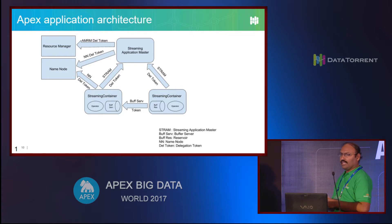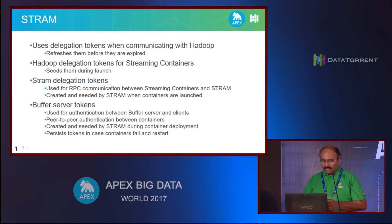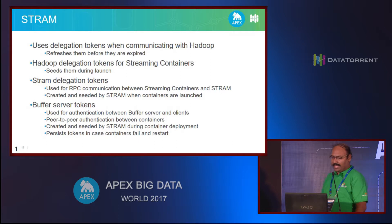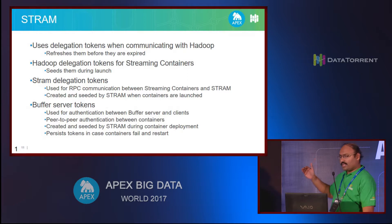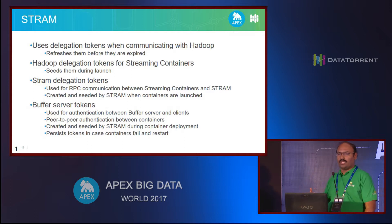The same process happens when the application master is starting all the containers. In this case, the application master acts like the delegation token server - it issues its own delegation tokens and seeds the containers, so when the containers start they have delegation tokens to talk to the app master. Similarly, it also issues buffer server tokens so the operators can get data from the upstream buffer server. Most of this communication is actually RPC when Apex is making calls to Hadoop. The only exception is container-to-container data flow, which is not RPC because RPC is not designed for high-speed data flow - it's a custom low-level network I/O.